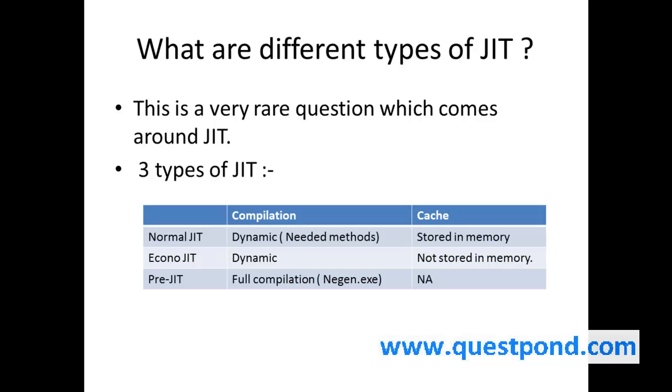There is one more rare question around JIT. I personally feel this question does not test anyone's .NET knowledge. But the question comes, so let's try to answer it. What are the different types of JIT available in .NET? There are three types of JIT available, and these JITs can be categorized depending on the way they compile and the way they do caching.